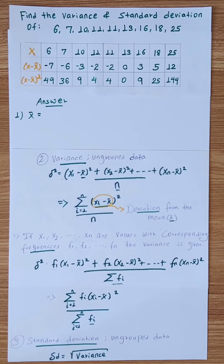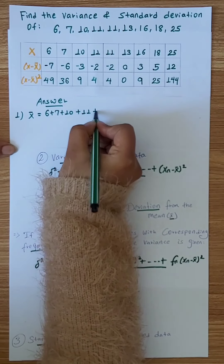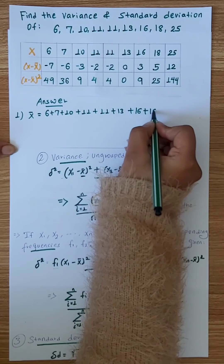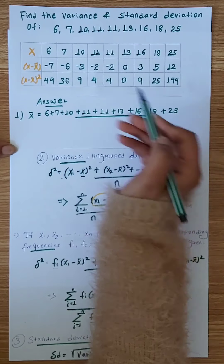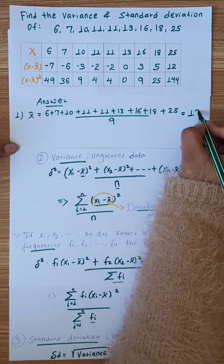A lower standard deviation means data is spread in a relatively small range around the mean. A large value of standard deviation means data is spread in a relatively large range. We can see the ungrouped data sum over the number of values gives us the mean.